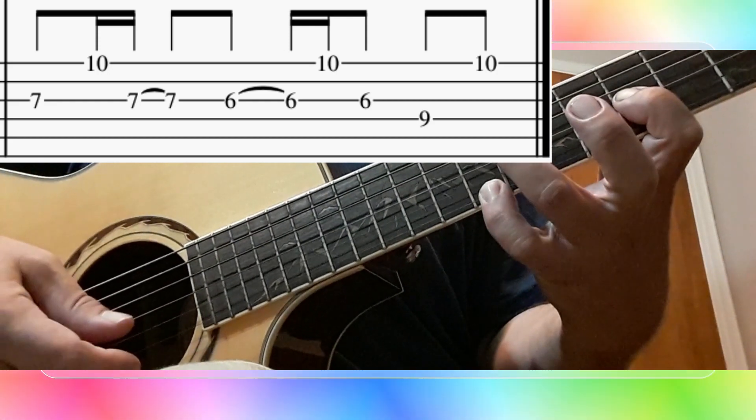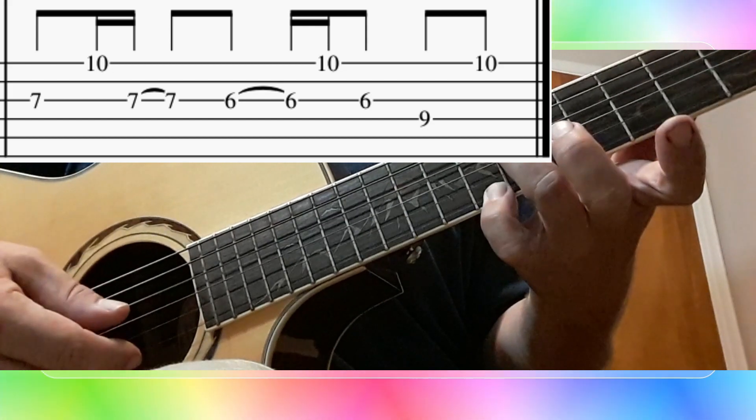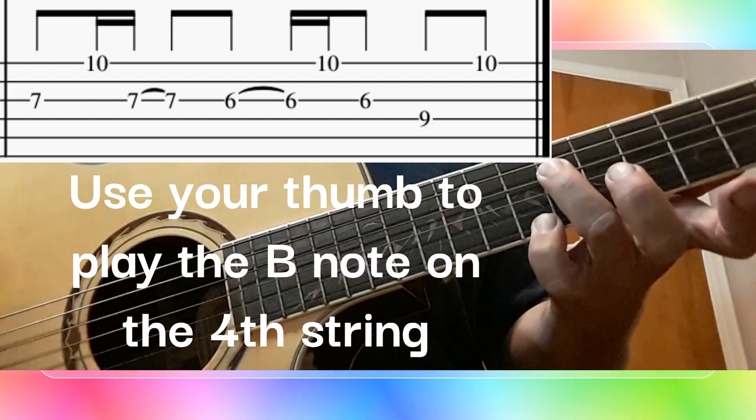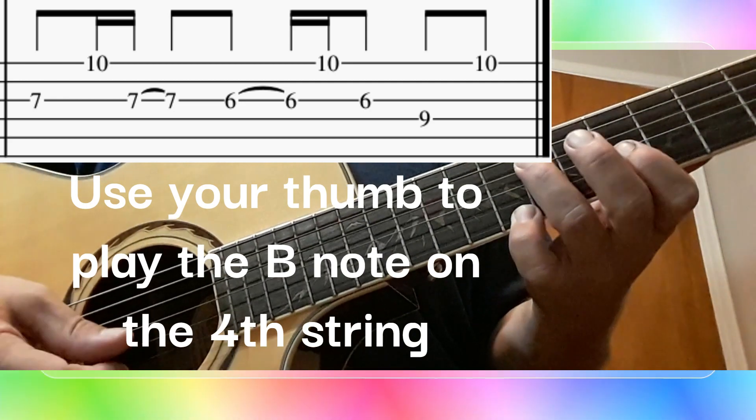Now to finish, the 3rd finger moves over to string 4 at fret 9. That's a B. And then the 4th finger plays string 1, the high D. So that's all of measure 2.